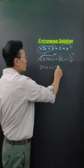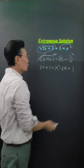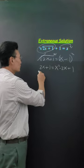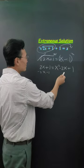And if you FOIL this, you get x squared minus 2x plus 1. Bring everything to the right side, or subtract 2x and 1.